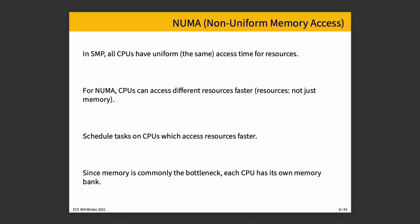In SMP systems, all CPUs have uniform — that is, the same — access to resources. But there can be non-uniform memory access, meaning CPUs access different resources at different speeds. That would be a consideration for scheduling, where you schedule tasks on CPUs where they can access resources faster. Some server boards have two CPU chips and two banks of RAM, where memory in the other CPU's bank is slower to access, so the OS should schedule things on whichever CPU is closest to the data.